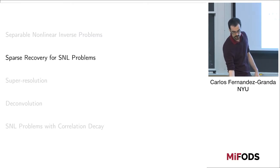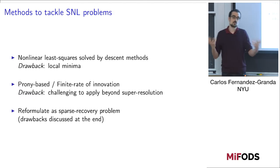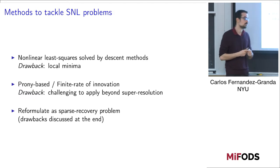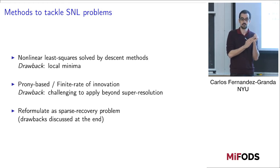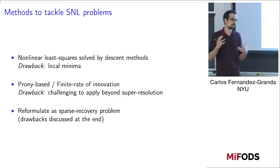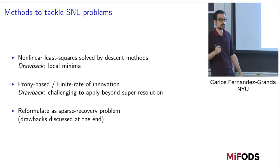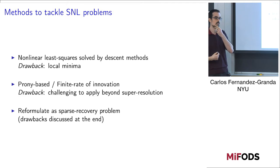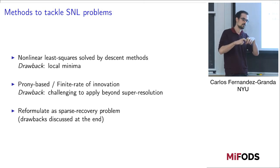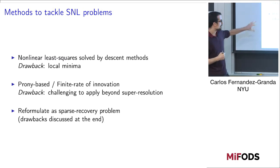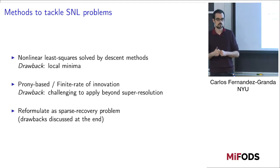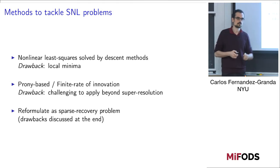How can we apply sparse recovery for SNL problems? There are quite a few methods. You could use a least-squares cost function and do gradient descent on the parameters, but typically you'll get stuck quickly in a local minimum. In the case of super-resolution, there are PRONY-based methods or finite rate of innovation methods, though they may be difficult to apply when the problem differs from super-resolution. Another option is to reformulate it as a sparse recovery problem, which is what I'm going to talk about now. This also has drawbacks, which I'll discuss at the end.